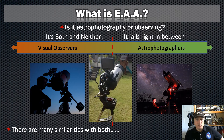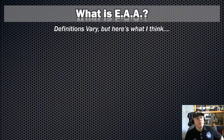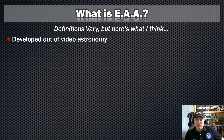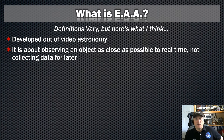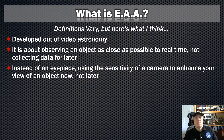There are many similarities with both. So really, what is EAA? Definitions vary, so here's my opinion. It developed out of video astronomy. It's about the observing of the object and doing it as close as possible to real time, and not necessarily collecting data for later — especially post-processing. The focus is around the object and not the picture. So instead of using an eyepiece, we're using the sensitivity of a camera to enhance our view of the object now, and not later.